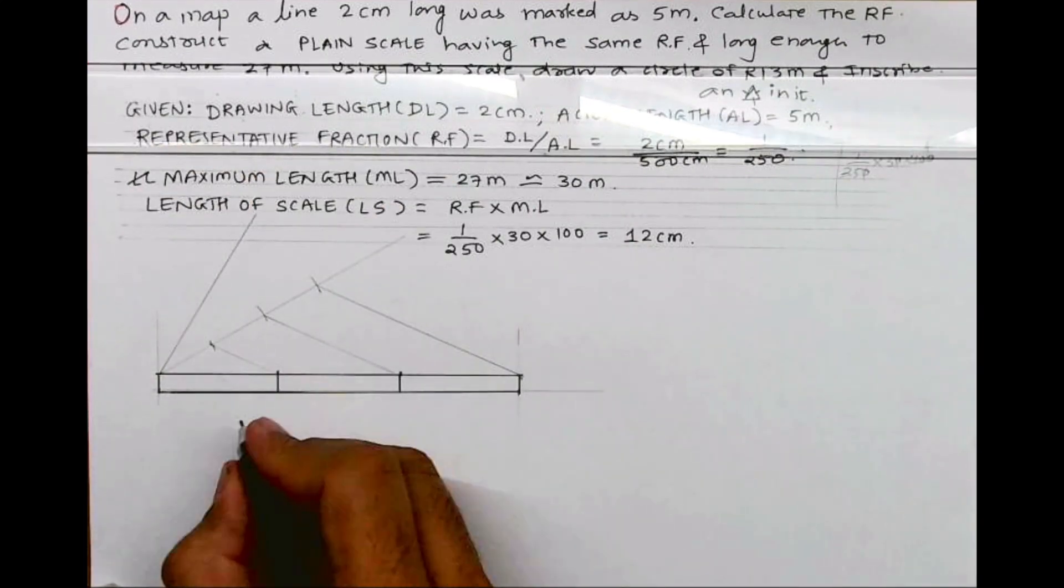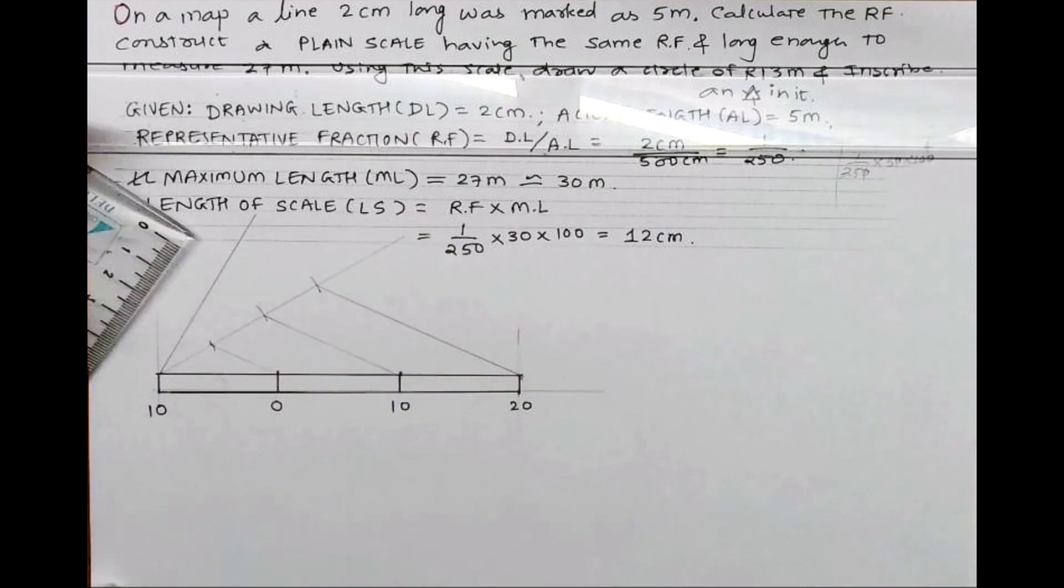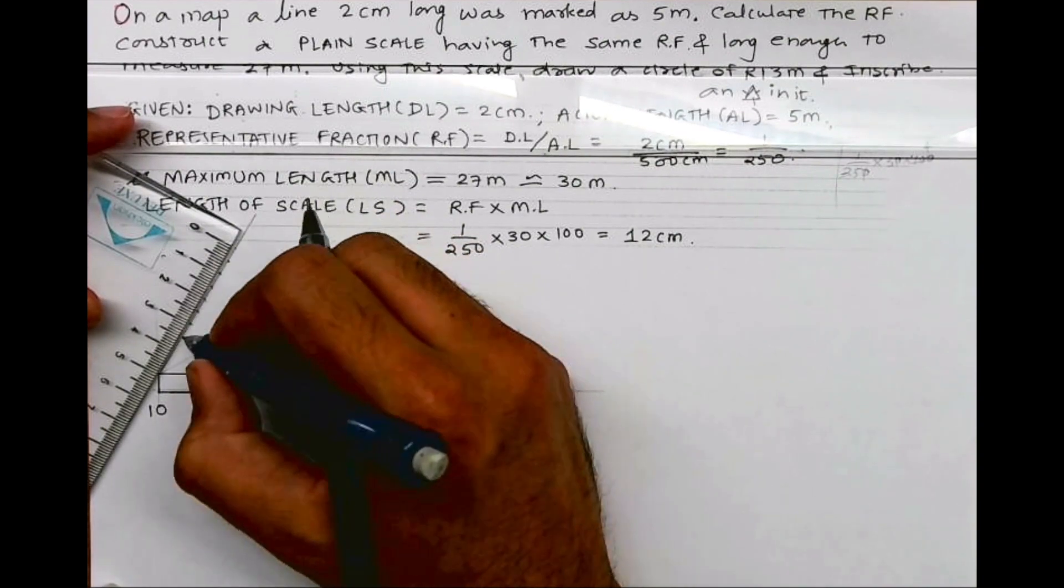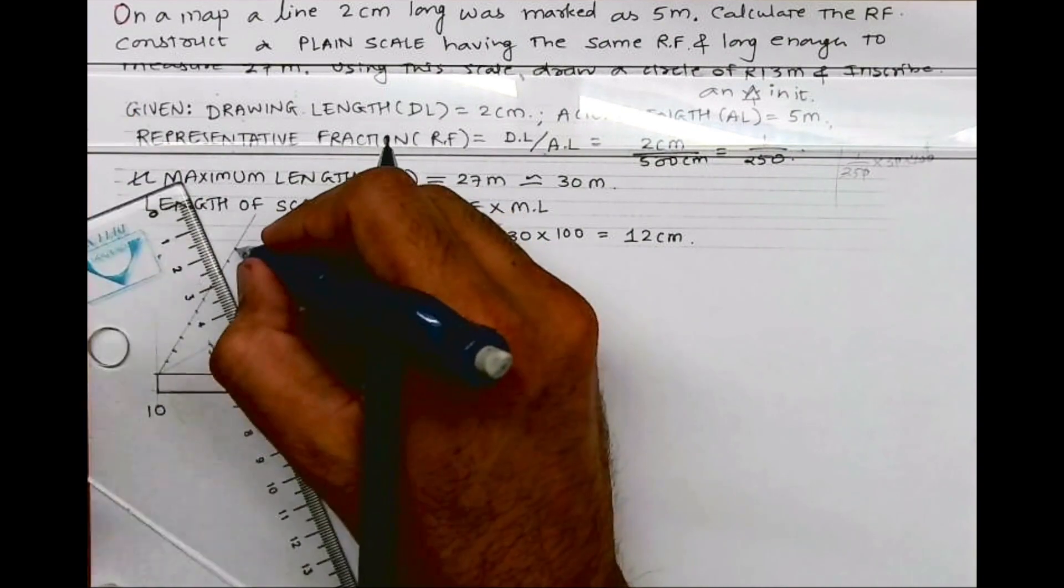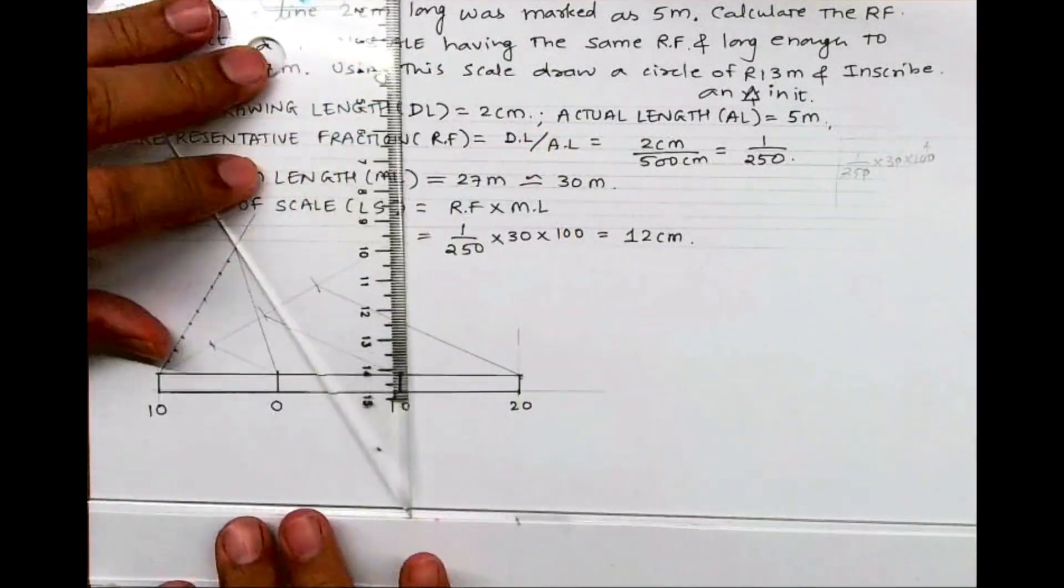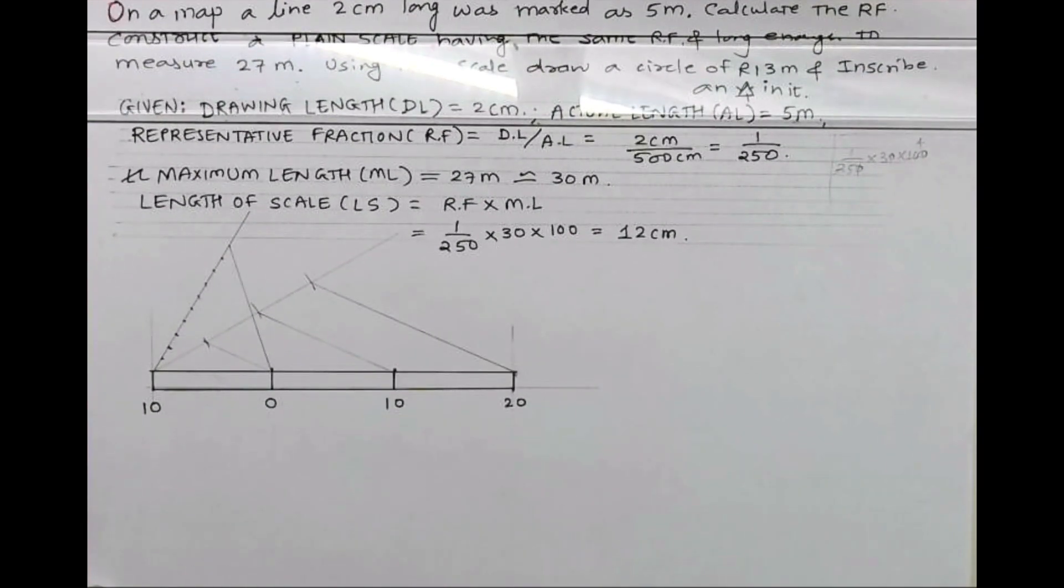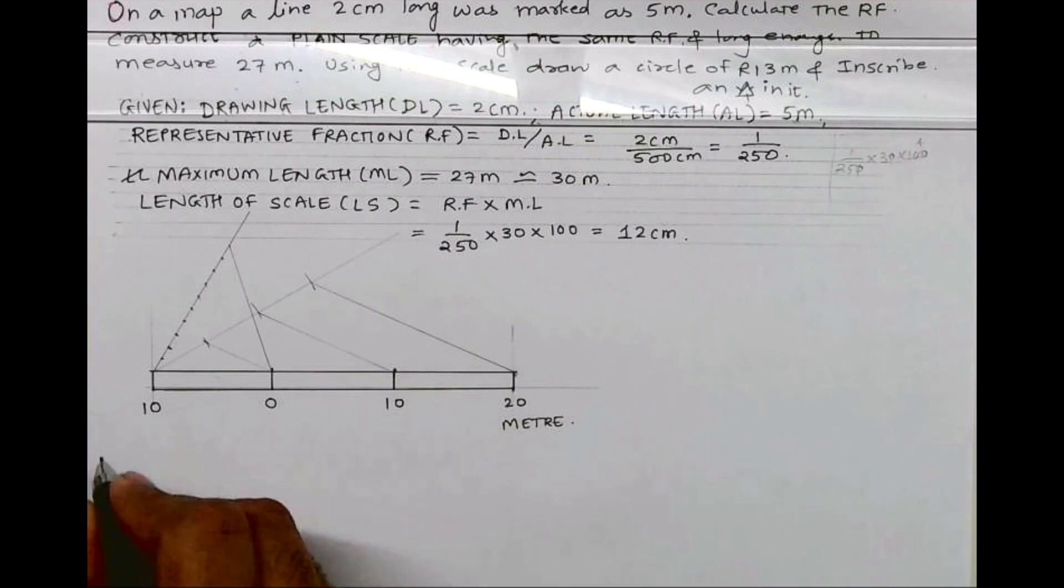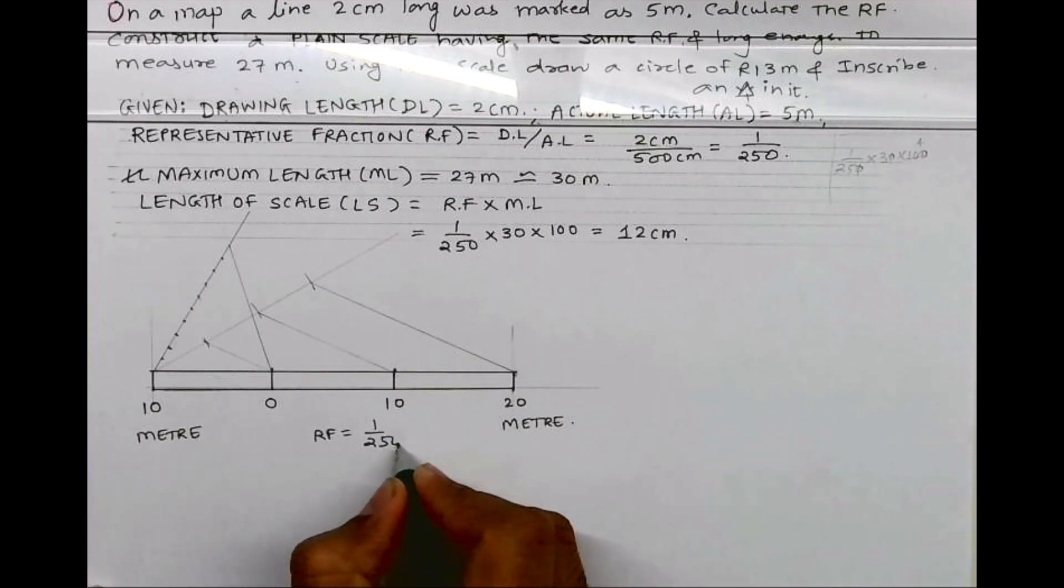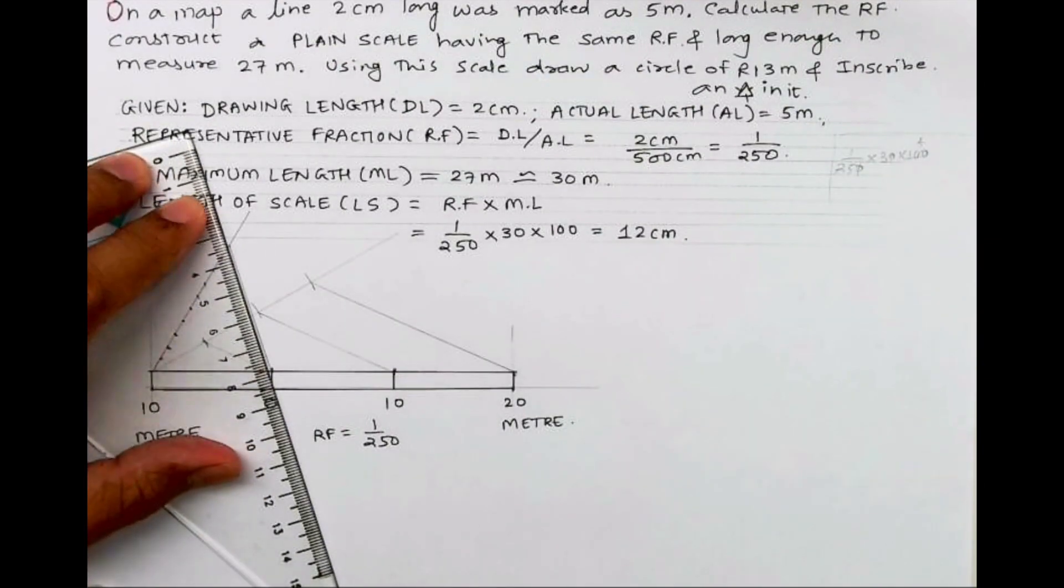Now we divide the first block into 10 parts. This is 0, 10, 20. Remember it is not 1, 2, because it is 30. Now I will divide the first block, which is 10 m, into 10 parts. We can use this parallel line method. This is meter. And I can write RF over here, 1 upon 250. Now I need to divide this first block into 10 parts.